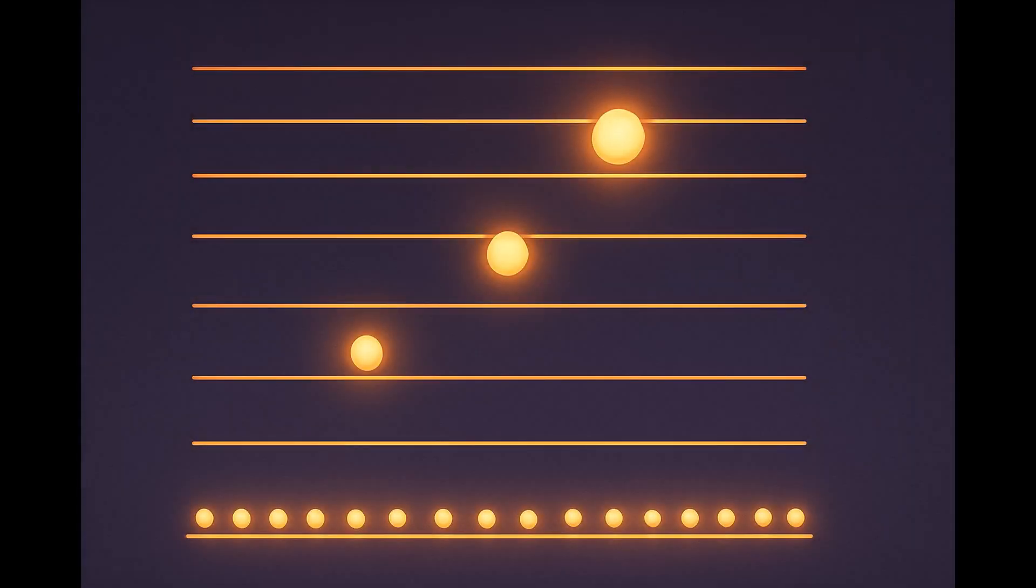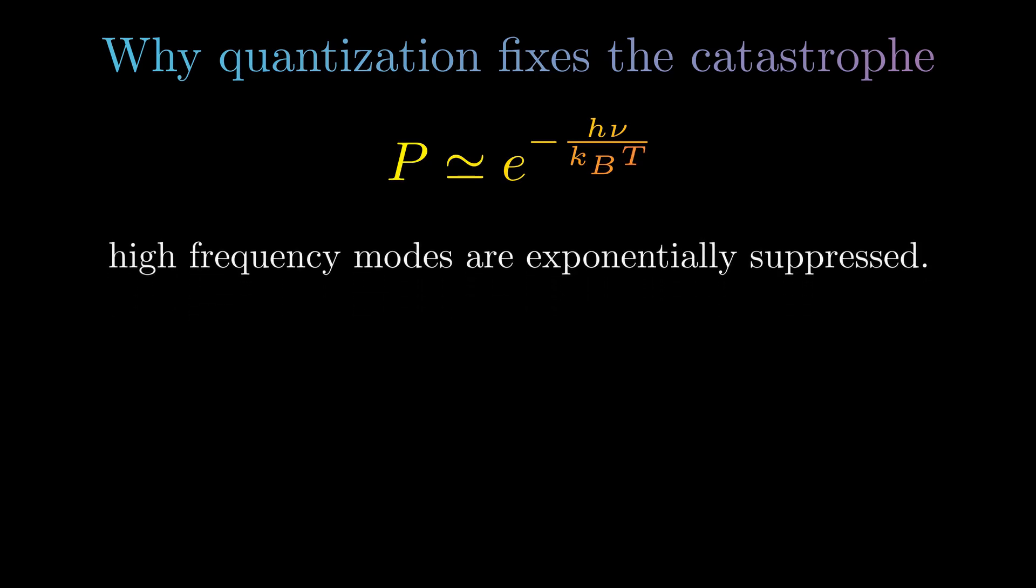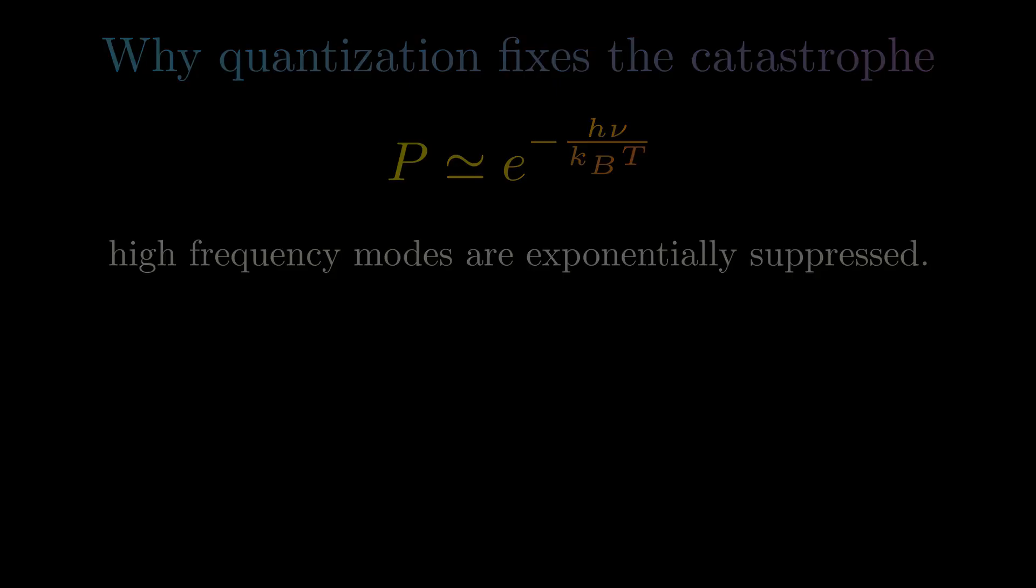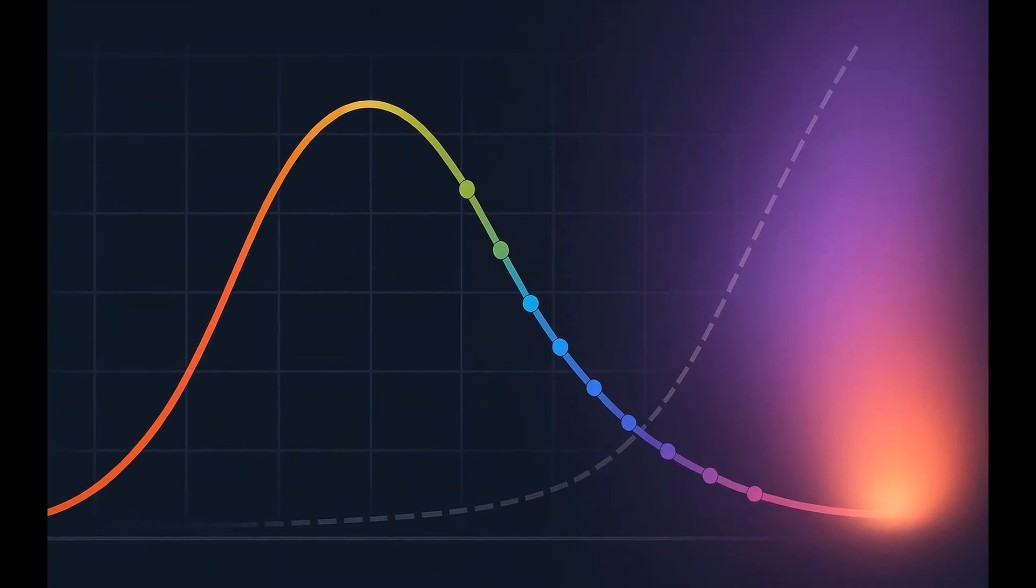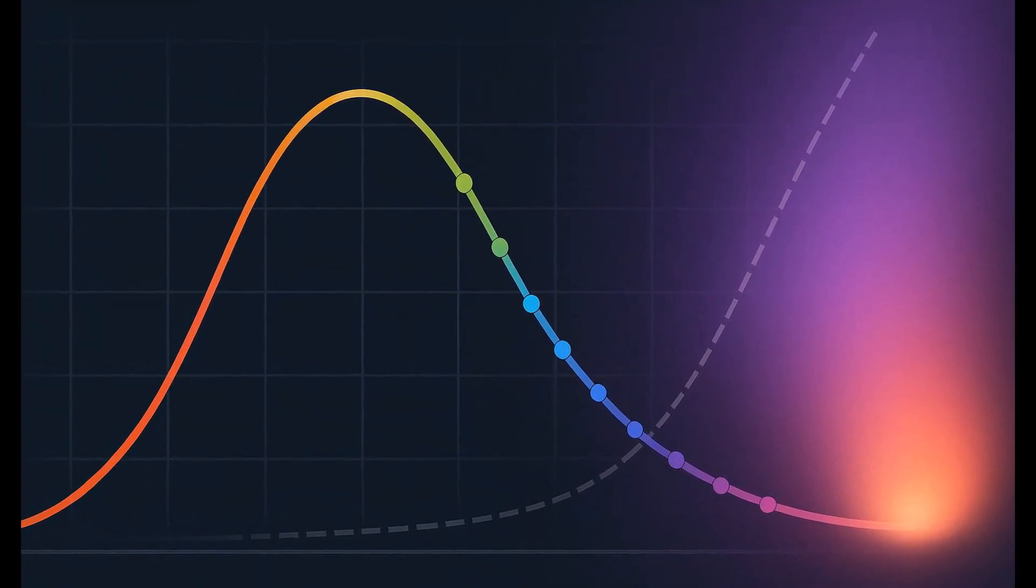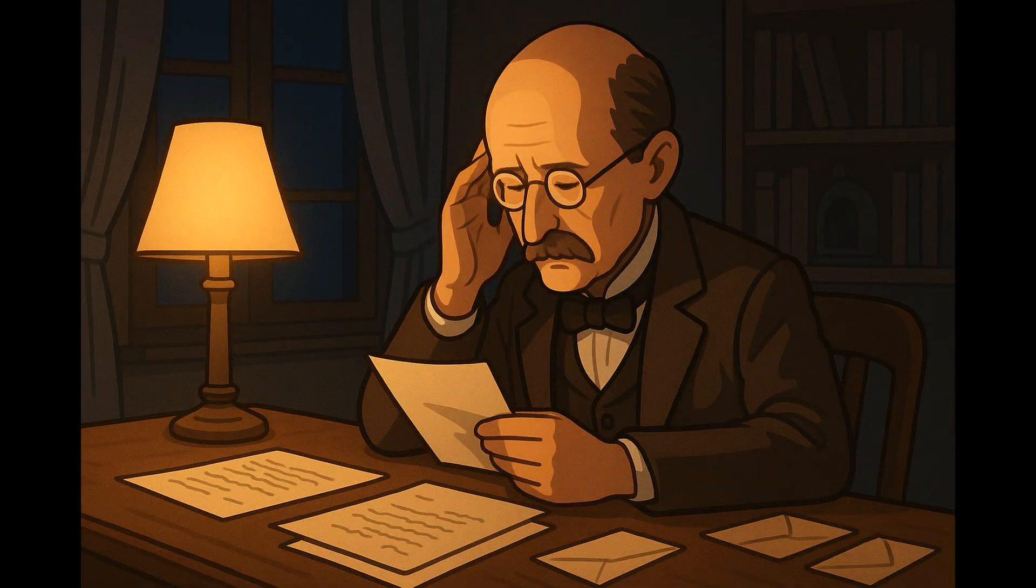After quantization, high-frequency modes require large quanta to be excited. In other words, at a certain temperature, the probability of exciting such a mode is suppressed by the Boltzmann factor. Unlike the classical case, high-frequency modes are exponentially suppressed. With this idea in mind, the black body spectrum fit perfectly. The catastrophe was gone.